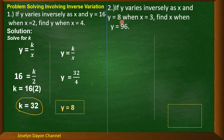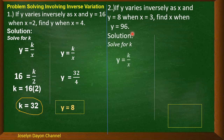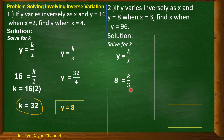Second example: if y varies inversely as x and y = 8 when x = 4 — wait, x here is 3 — find x when y = 96. Using the same process, translate: y = k/x. Substitute y = 8 and x = 3: 8 = k/3. Solve for k: k = 8 × 3 = 24. So the value of k is 24.